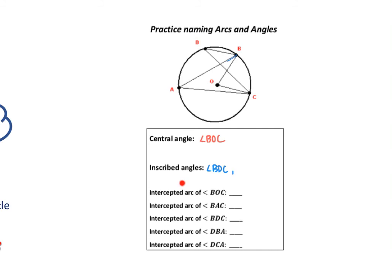Another inscribed angle is BAC, where the vertex is on the circle. I also see ACD — angle ACD — and angle ABD. So going over all the inscribed angles: BDC, BAC, and then on the other side, ACD and ABD. Those are my inscribed angles.